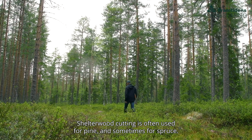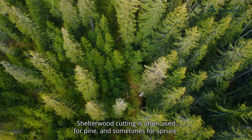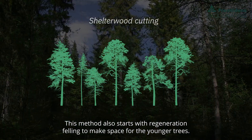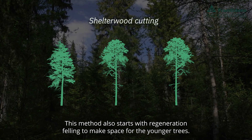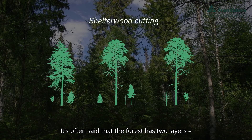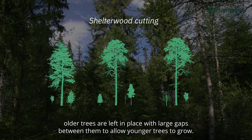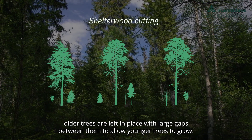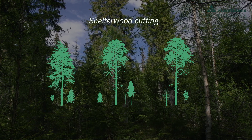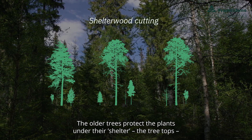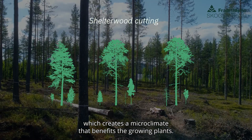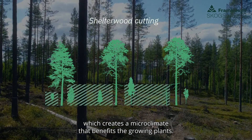Shelterwood cutting is often used for pine and sometimes for spruce. This method also starts with regeneration felling to make space for the younger trees. It's often said that the forest has two layers. Older trees are left in place with large gaps between them to allow younger trees to grow. The older trees protect the plants under their shelter and treetops, which creates a microclimate that benefits the growing plants.